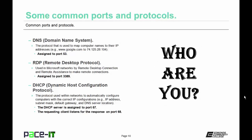Then we have DNS, Domain Name System — the protocol used to map computer names to their IP addresses, such as www.google.com to IP address 74.125.28.104. Google.com is a whole lot easier to remember than that IP address. DNS is assigned to port 53. Then we have RDP, Remote Desktop Protocol, used in Microsoft networks by the remote desktop connection and remote assistance applications to make remote connections. It's assigned to port 3389.